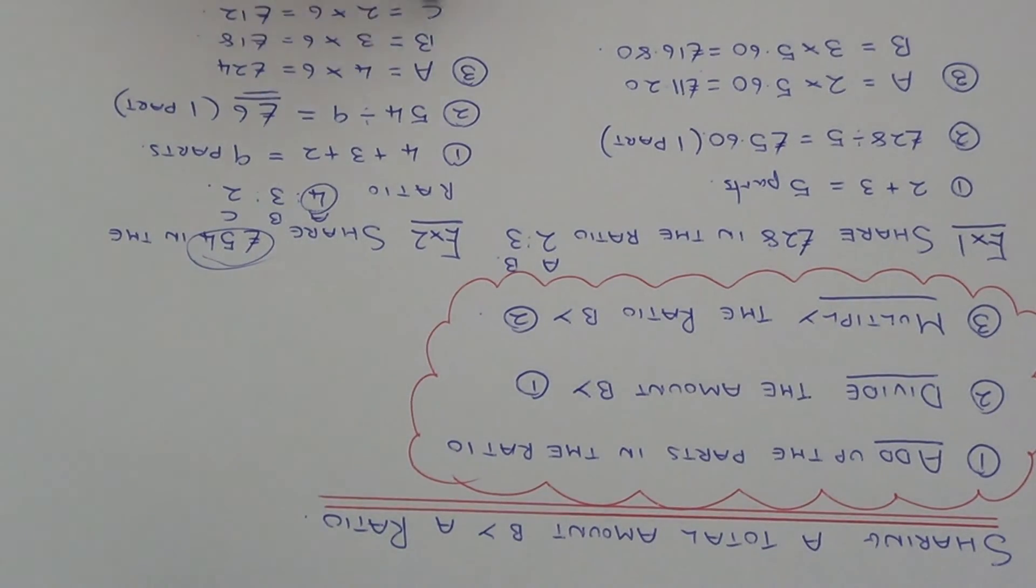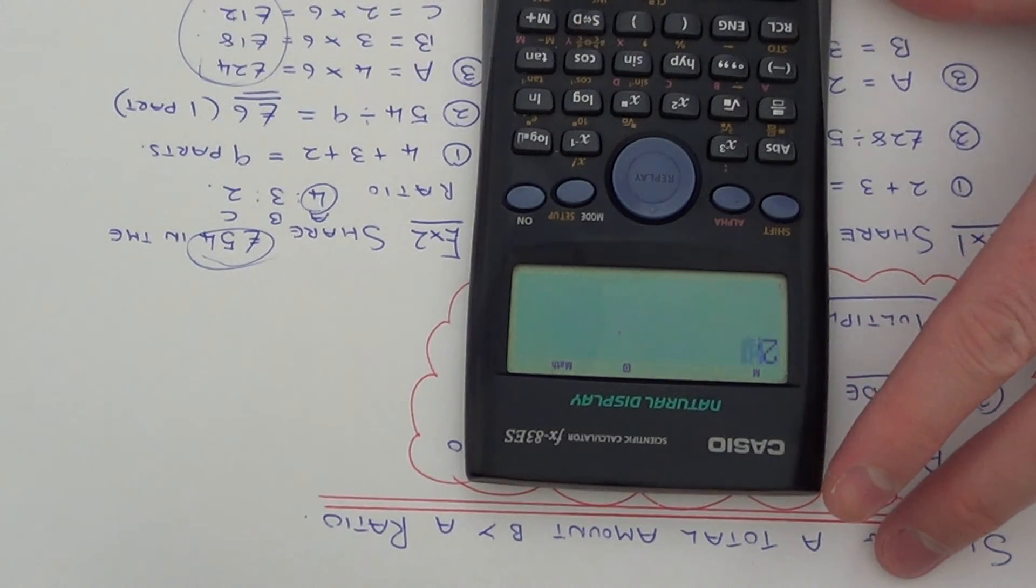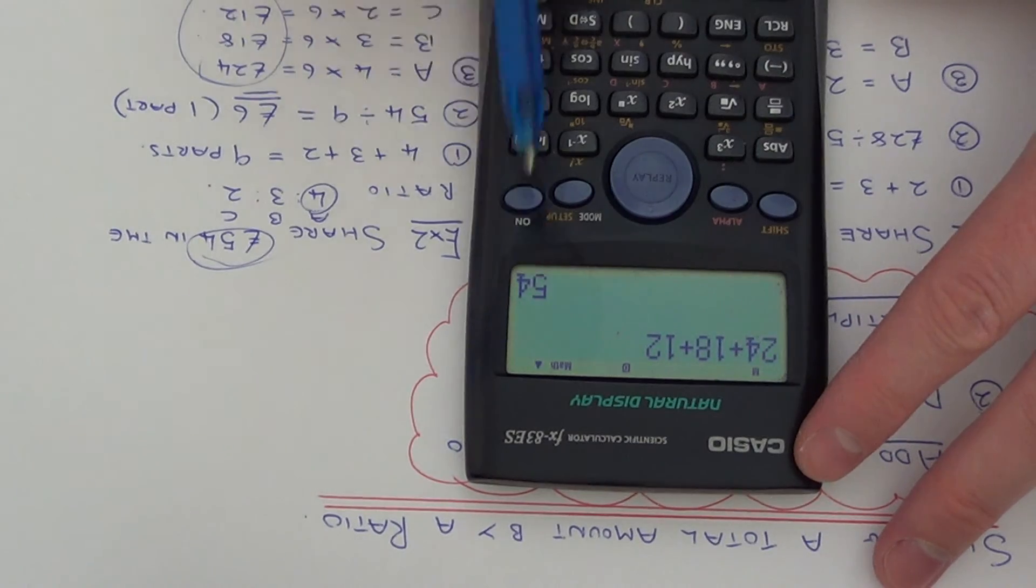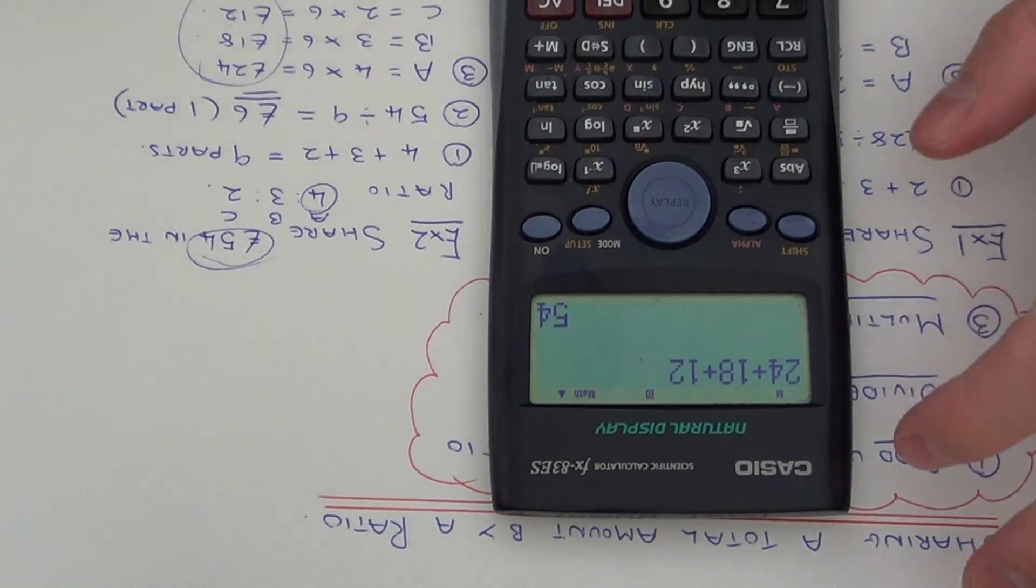So again you can check your answer and see if it's correct. Because all those three amounts should add up to £54.00. So let's check this on your calculator. So 24 plus 18 plus 12. You see it gives you the answer £54.00, which was the original amount which you had to share.